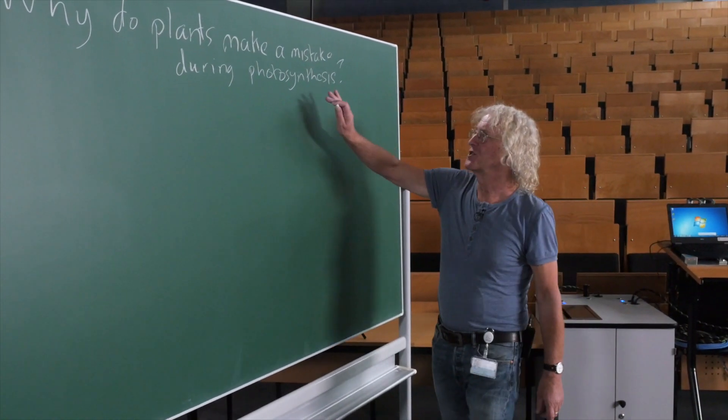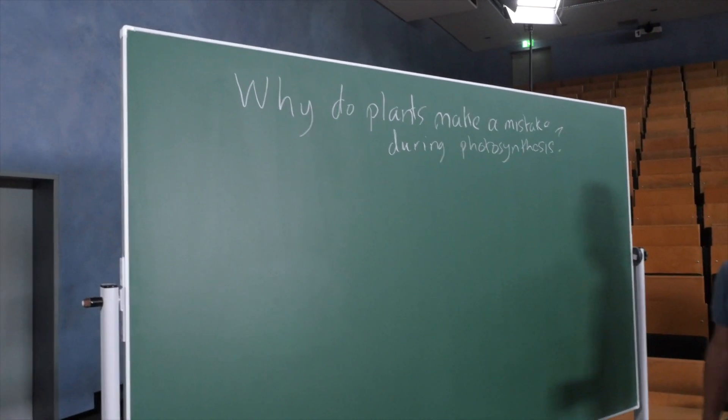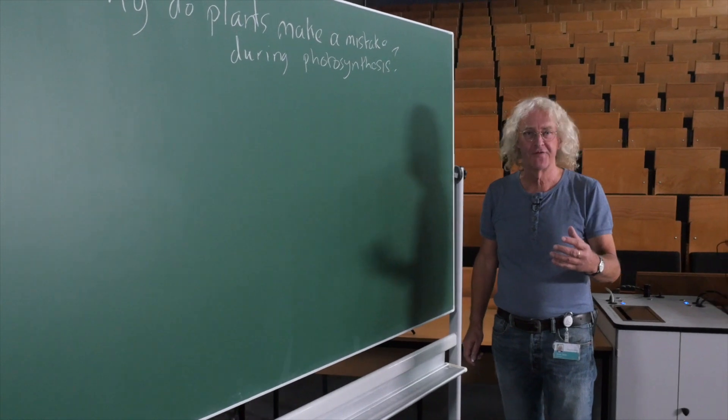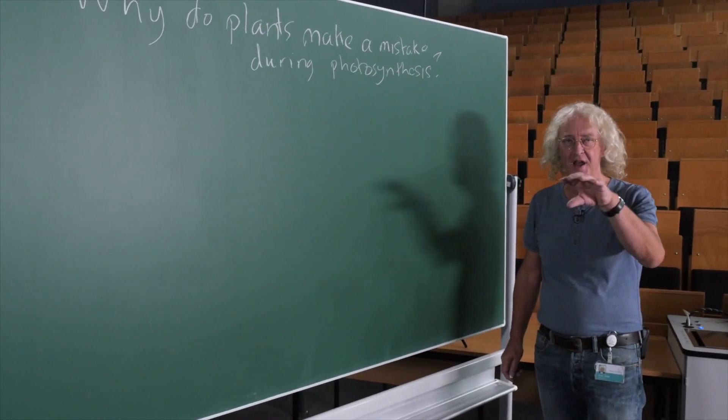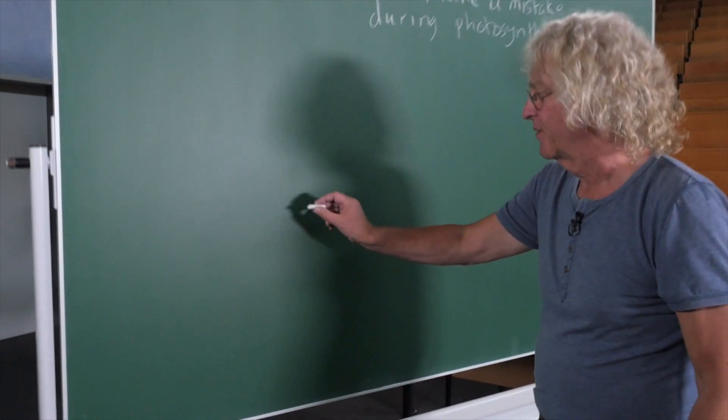Why do plants make a mistake during photosynthesis? In my last video, I explained that oxygen is bad for photosynthesis. Oxygen leads to a lower rate of photosynthesis, and this is because of Rubisco.